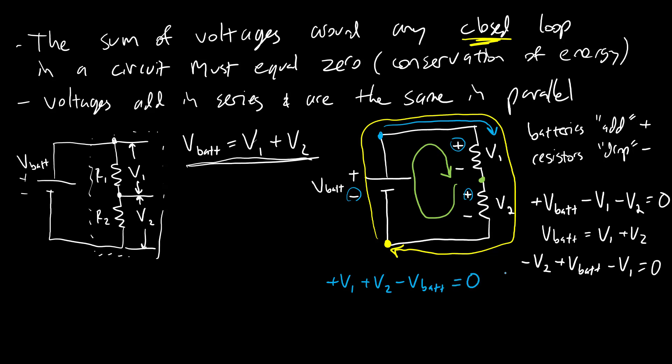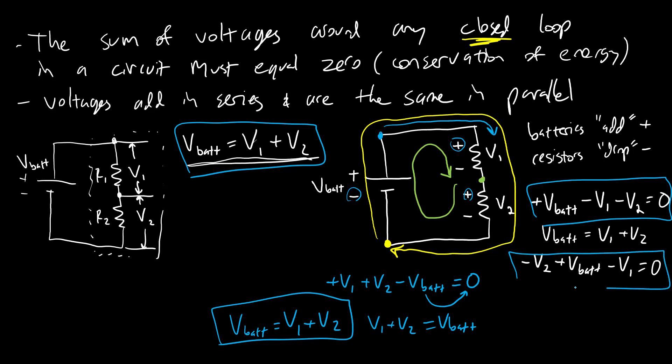But again, this is all just rearranging terms in the same equation. So I move Vbat over there and I have V1 plus V2 equals Vbat. If it makes you more comfortable to have the battery on the left, then you just flip that around and you get Vbat equals V1 plus V2. So there are, whatever, three or four different ways there to all arrive at what is mathematically the same equation at the end of the day.